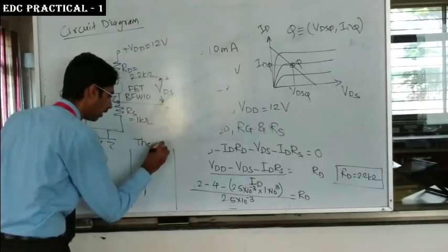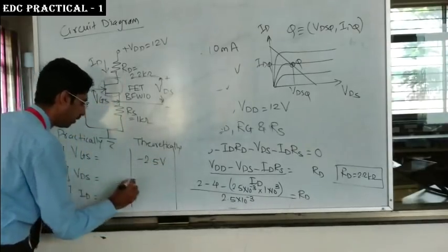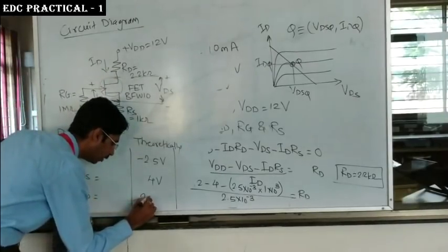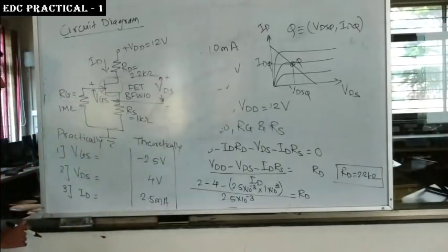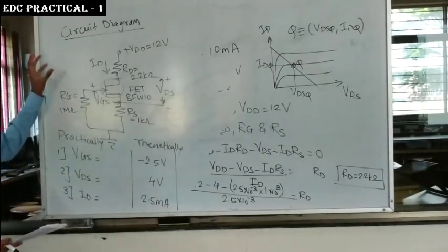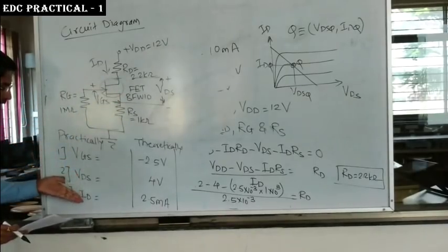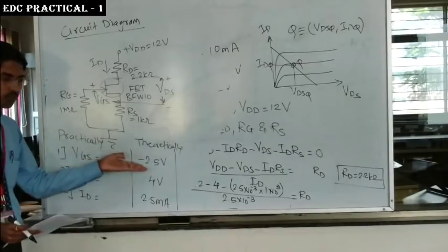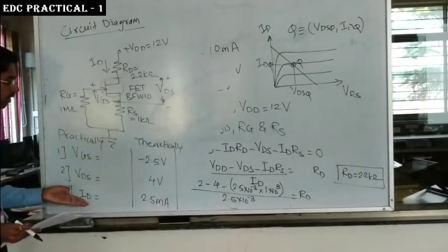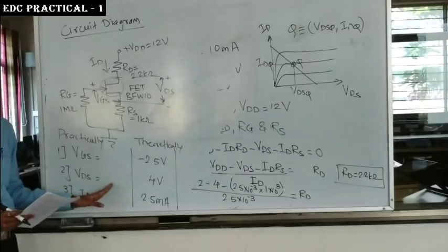The theoretical values are: VGS = −2.5 V, VDS = 4 V, and ID = 2.5 mA. Verification of the DC operating point means constructing the circuit on a breadboard and using a DMM to measure VGS, VDS, and ID. These practical values must be close to the theoretical values.